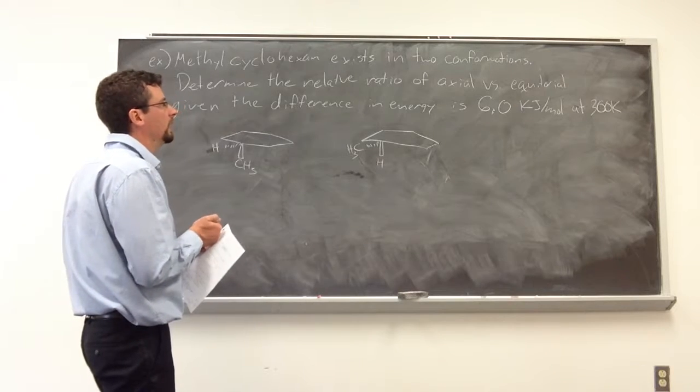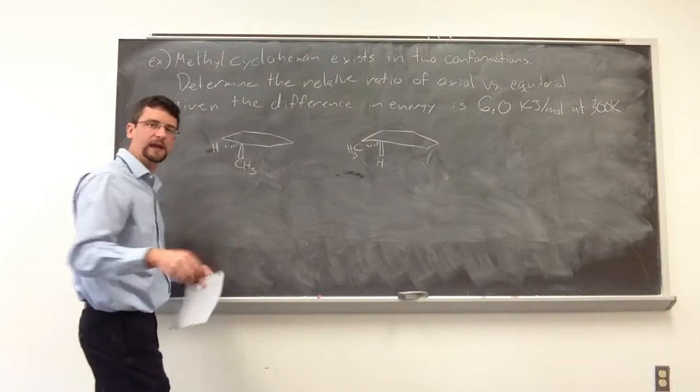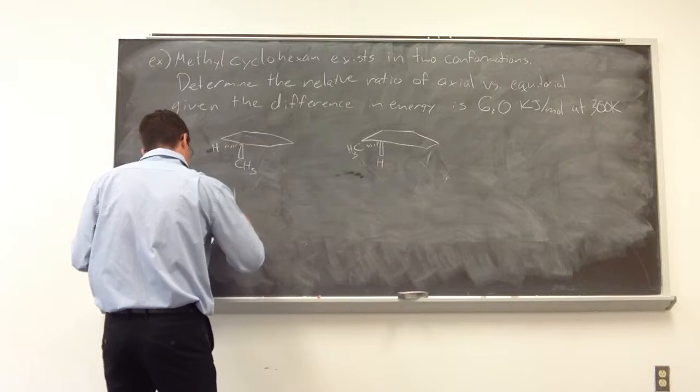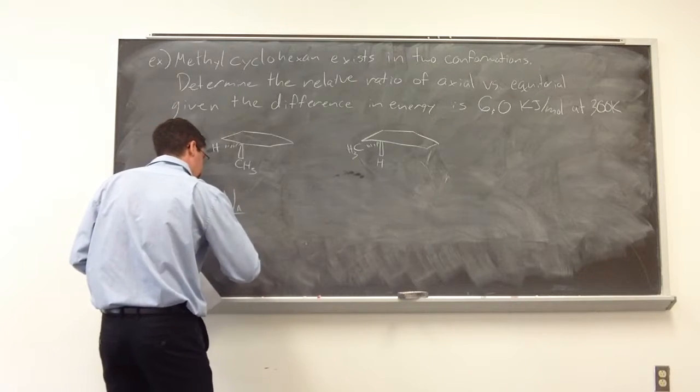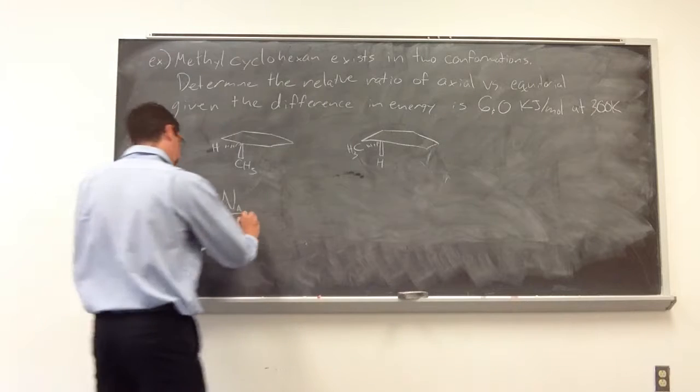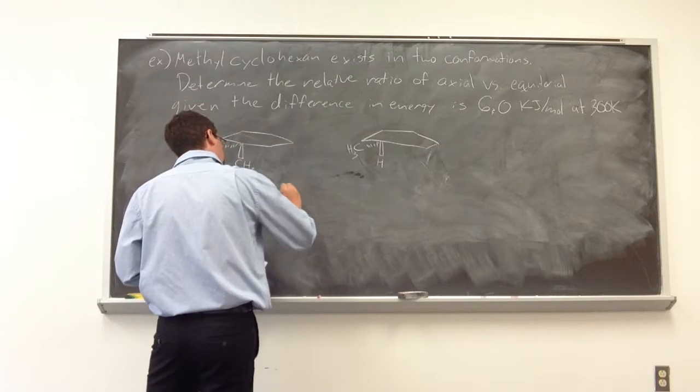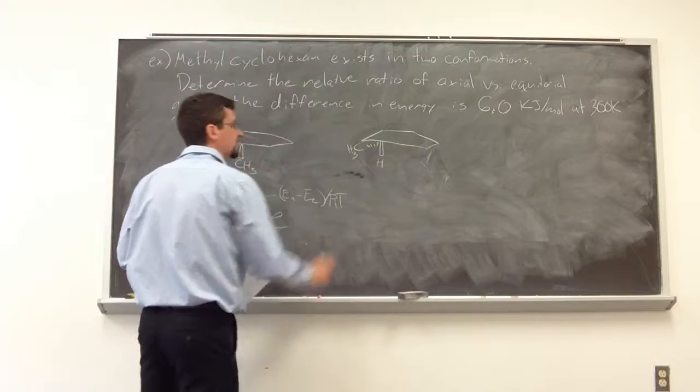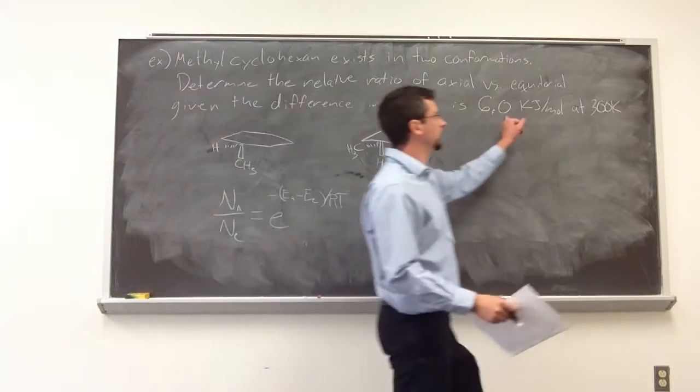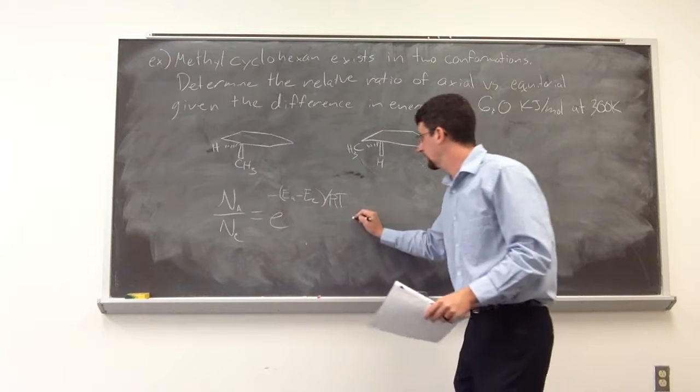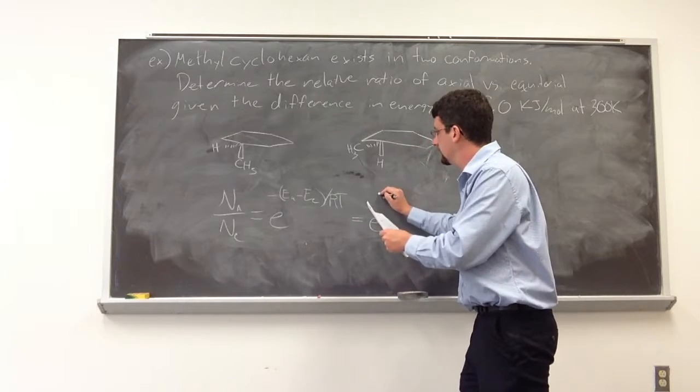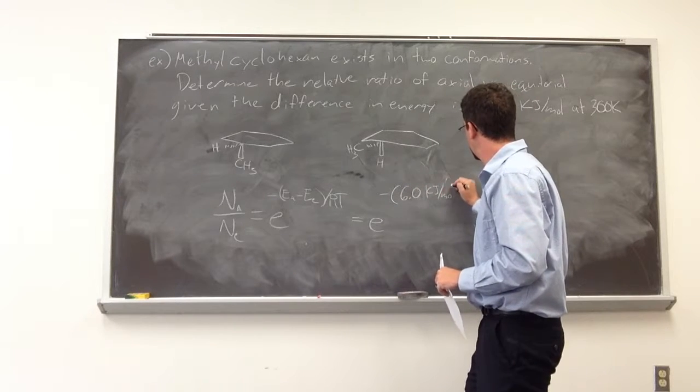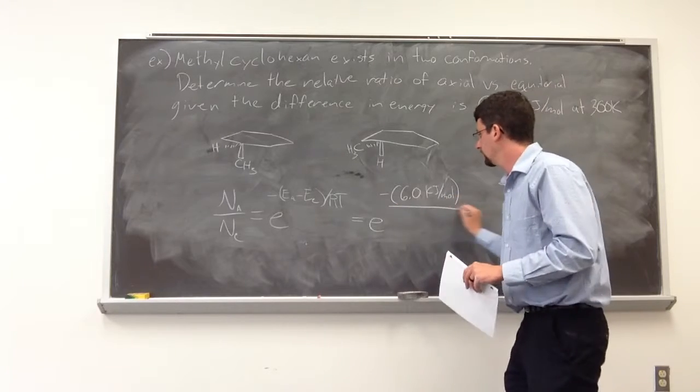So if we go back to our original equation where we had n sub i over n sub j, n sub j was the more stable state. So let's consider n sub a over n sub e, a for axial, e for equatorial equal to E to the negative, e sub a minus e sub e divided by RT. And why are we going with the mole one? Well, if we look, that energetic difference is in moles. So we have to consider that.